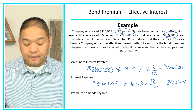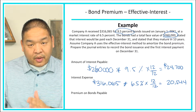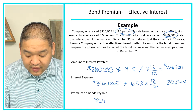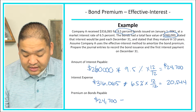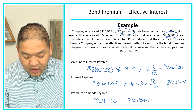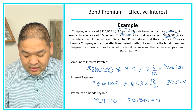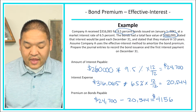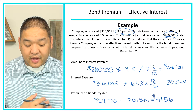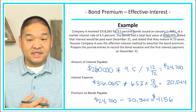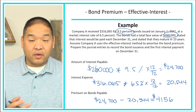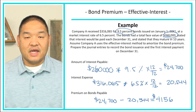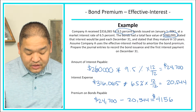What is going to be the reduction in the premium on bonds payable? The reduction is going to be the difference between the two: $24,700 minus $20,544 gives us $4,156. That's what we're going to reduce the premium on bonds payable. Remember, the premium on bonds payable was $56,065 — we're going to reduce it by $4,156, and by reducing it, our carrying value also gets reduced.